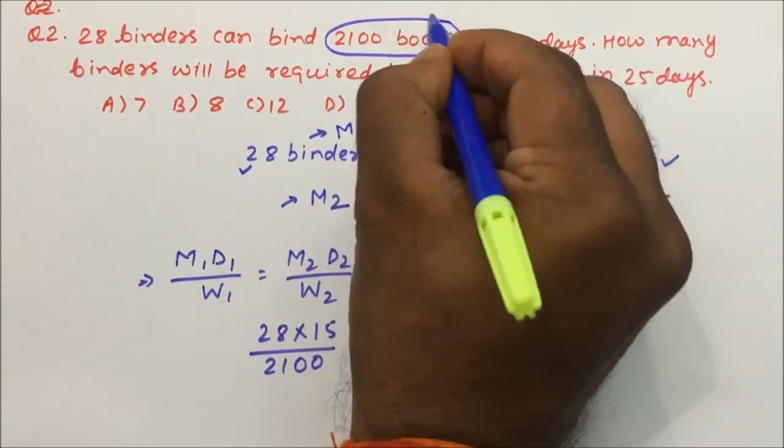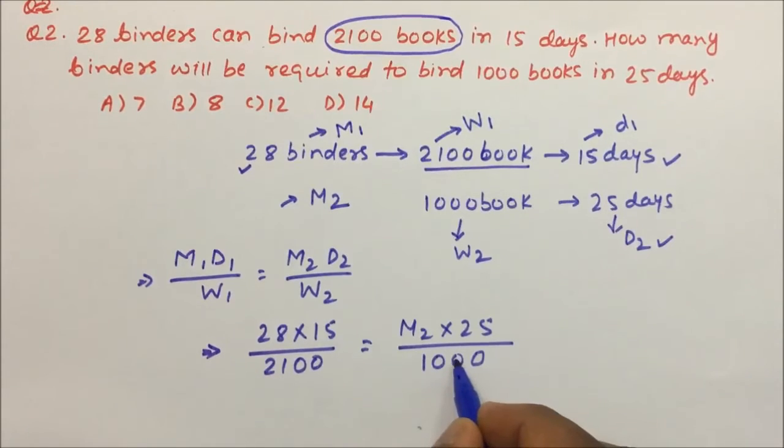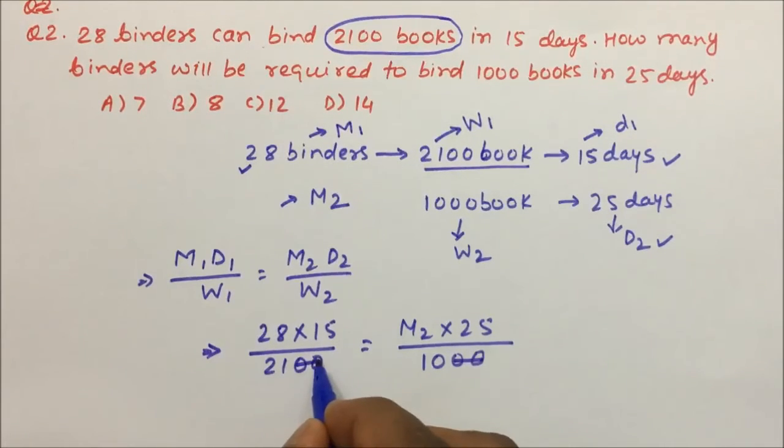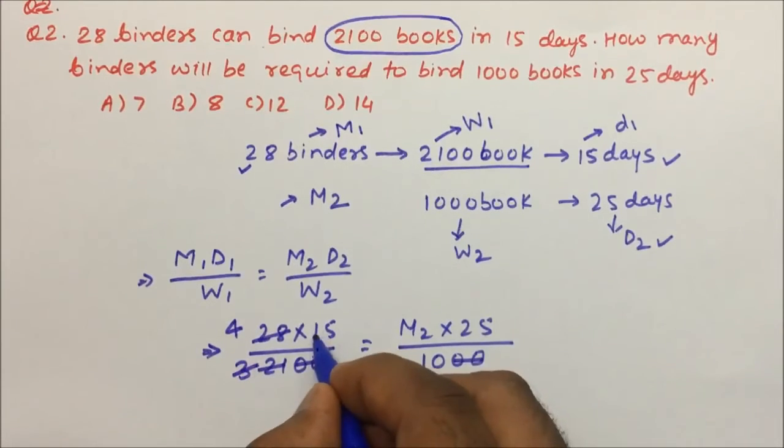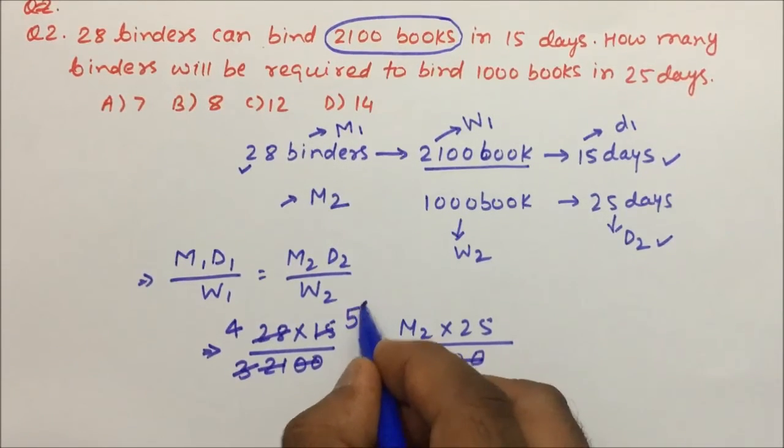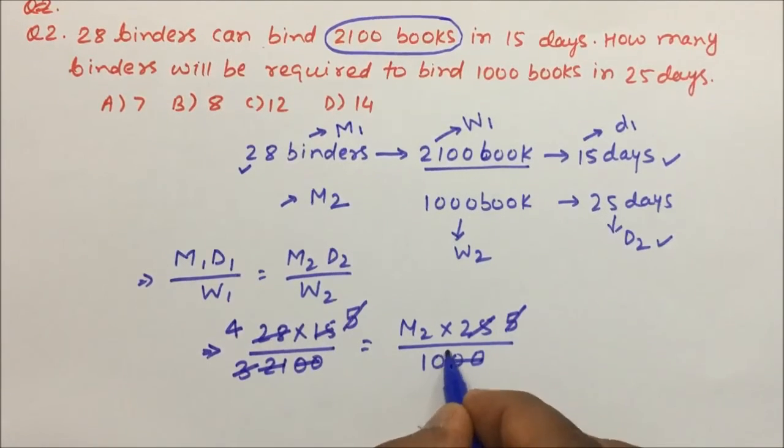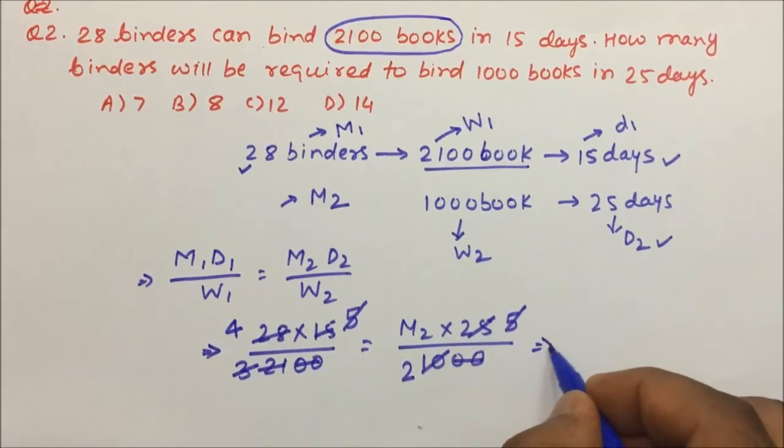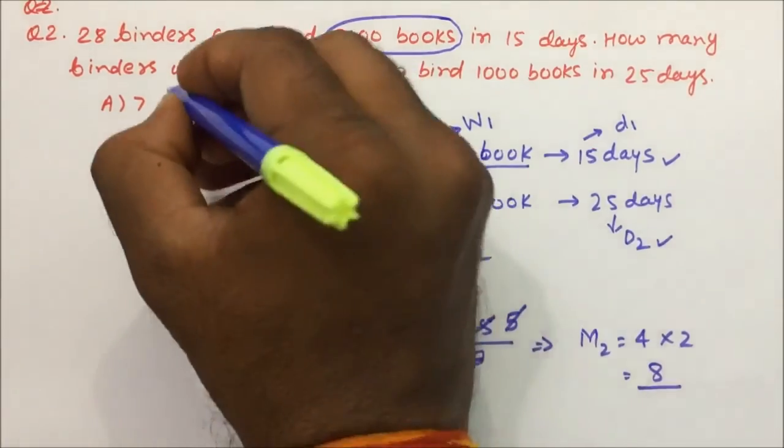In this case, binding 2100 books is our work, so don't get confused. Now this 100 and 100 will get cancelled. This is left side and this is right side. Now 7 into 3 and this is 7 into 4, and this is 3 into 5. From 5 you can divide this by 5, and this 5 will divide this by 2.